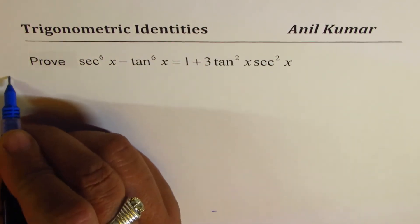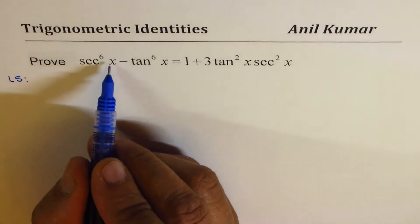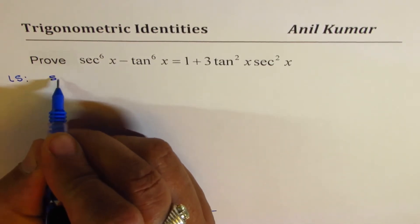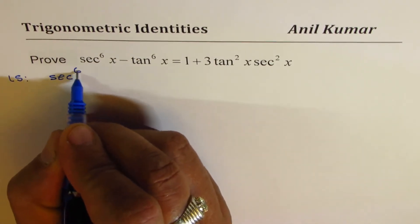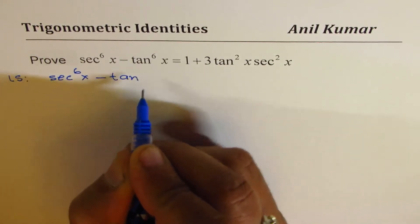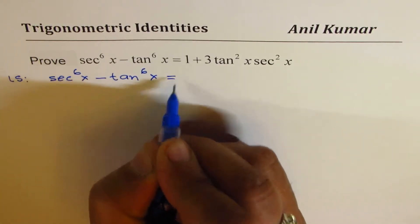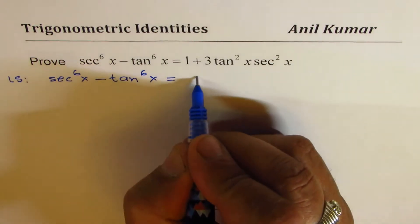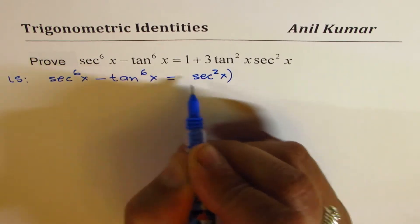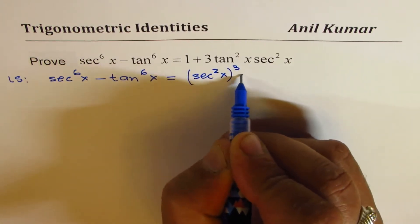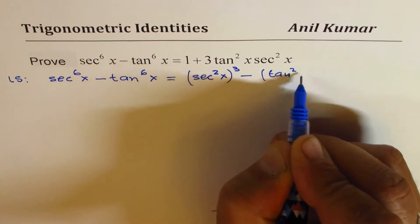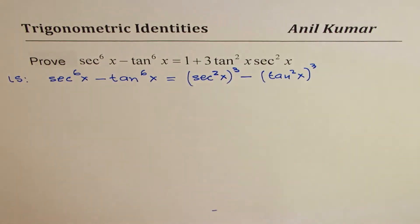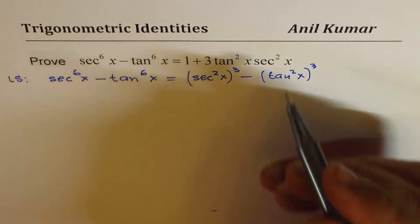We'll begin with the left side, where we have secant to the power of 6x minus tan to the power of 6x. It's better to write this as secant squared x whole cube minus tan squared x whole cube. This is difference of cubes.